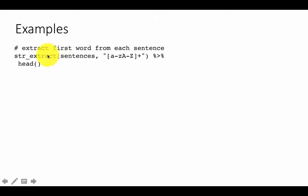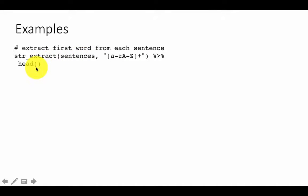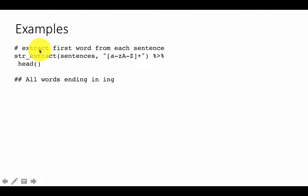This will pull out the first word from every sentence. There are 700 to 900 sentences in the database. Just to make sure things work well, we can go ahead and look at only the top 10. That's how we extract the first word of every sentence.